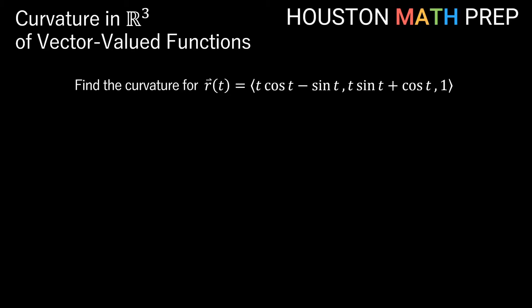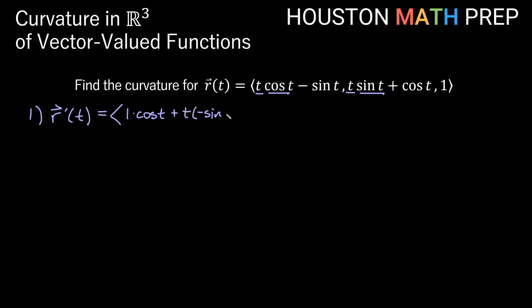We'll work through an entirely new problem here. We want to find the curvature for the vector-valued function ⟨t cos t − sin t, t sin t + cos t, 1⟩. The first thing we'll do is find r-prime of t — we'll need that to get its magnitude. We have product rules in the first two components, so be careful. The derivative of t cos t is: derivative of t times cos t, plus t times derivative of cos t, which is −sin t. Then minus the derivative of sin t, which is −cos t.